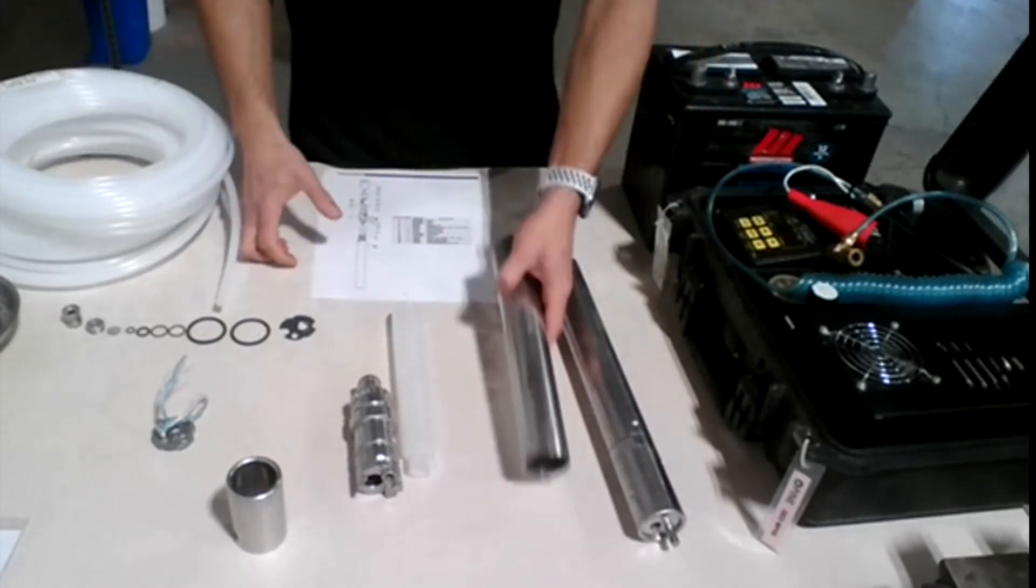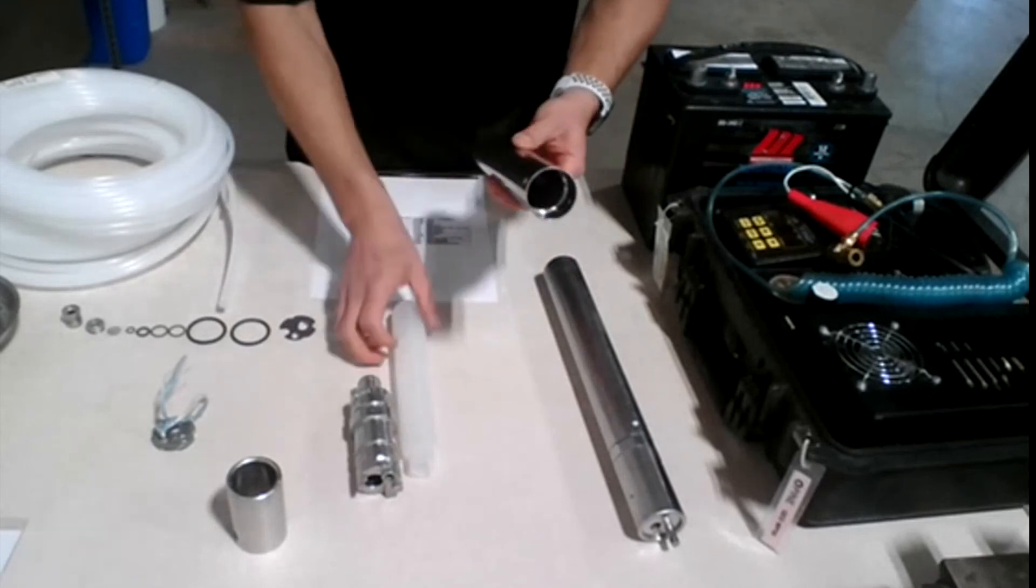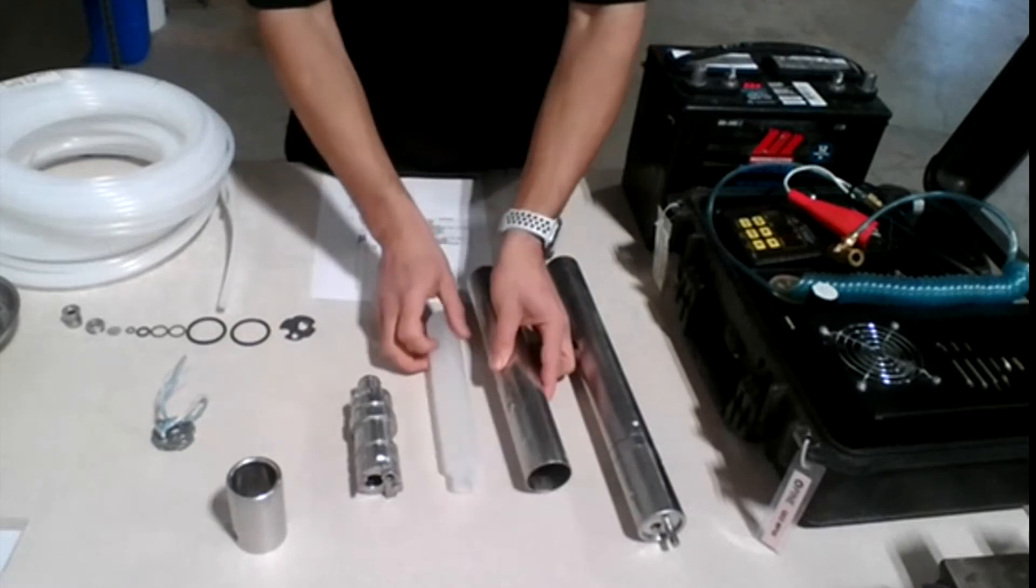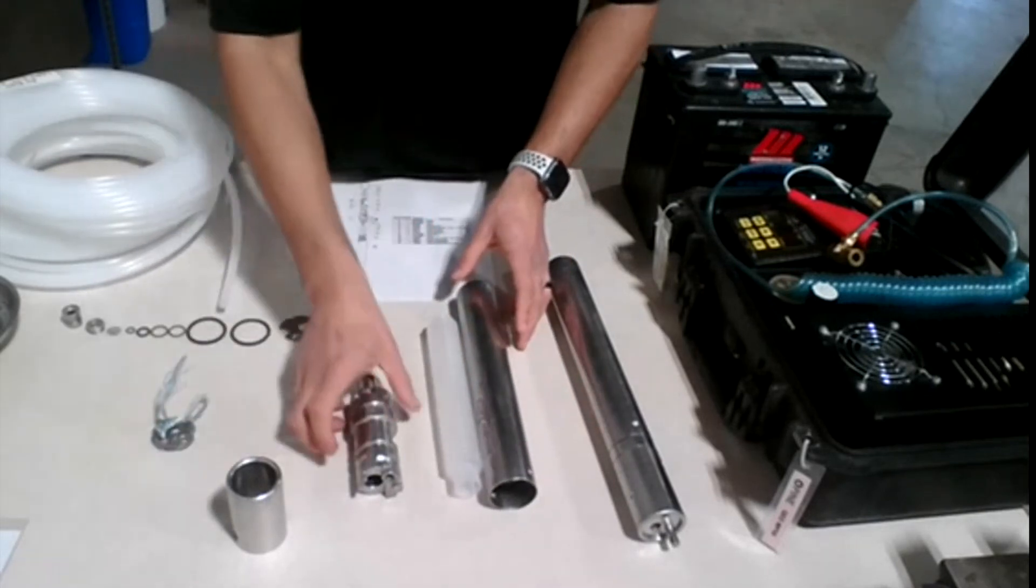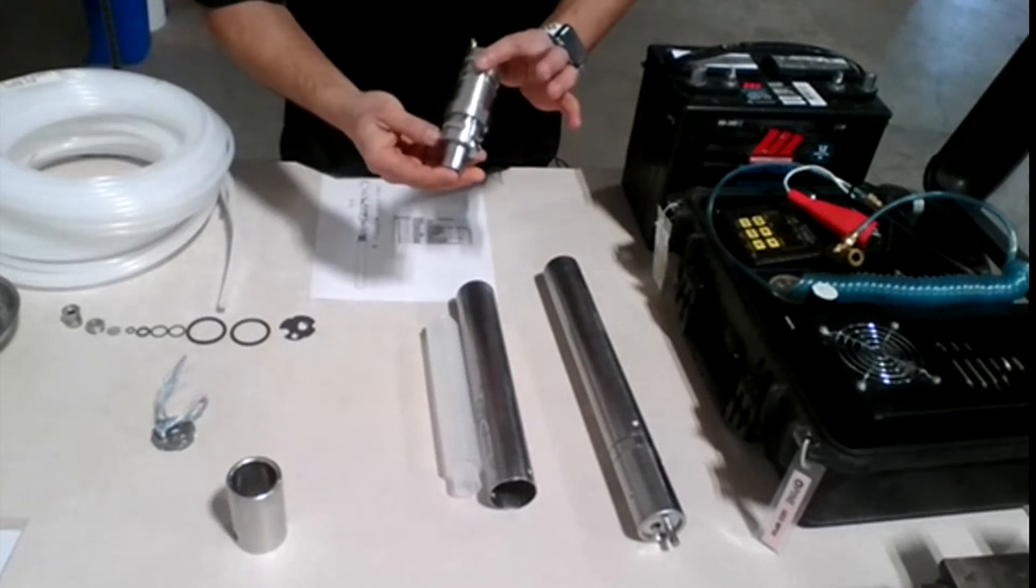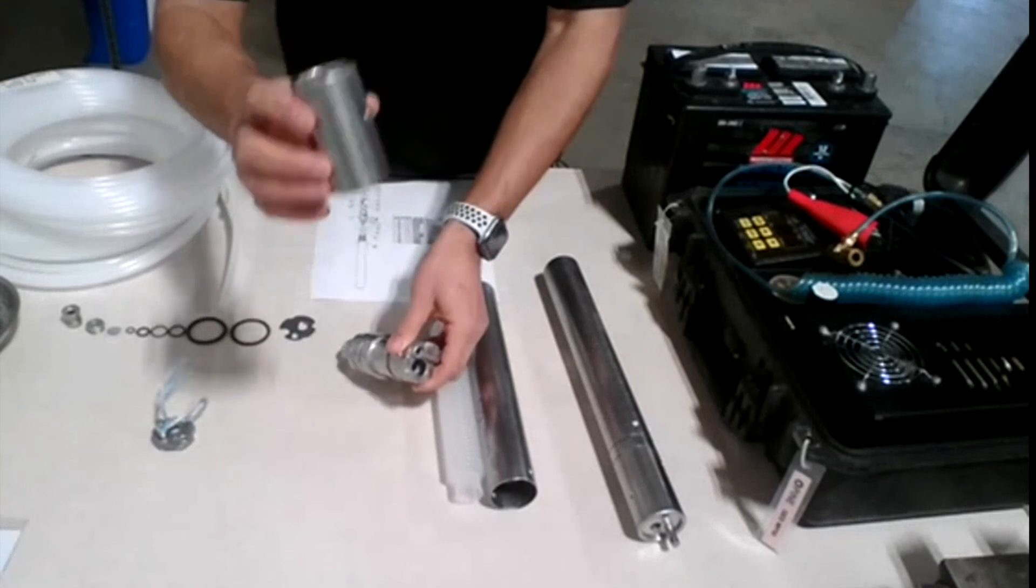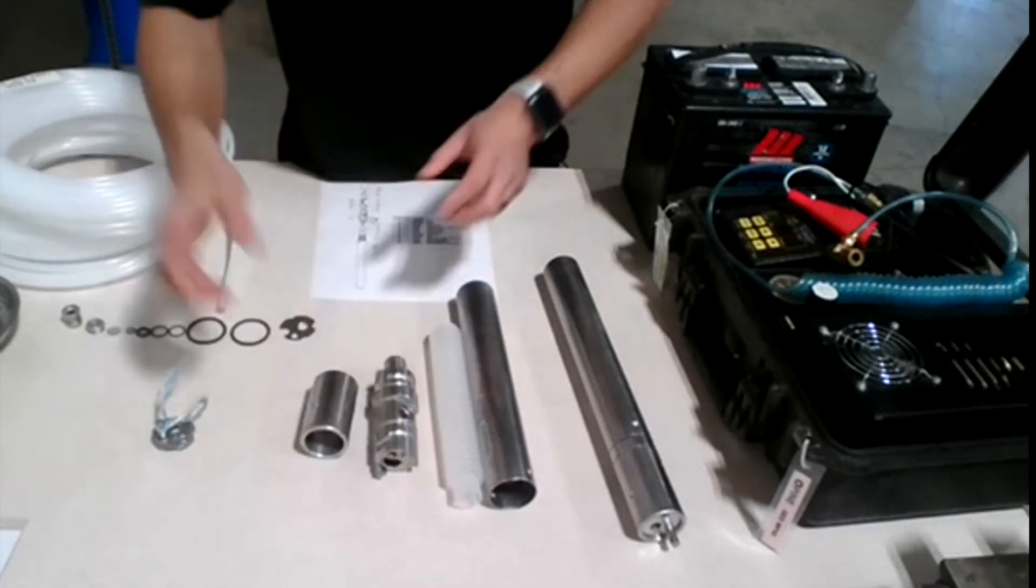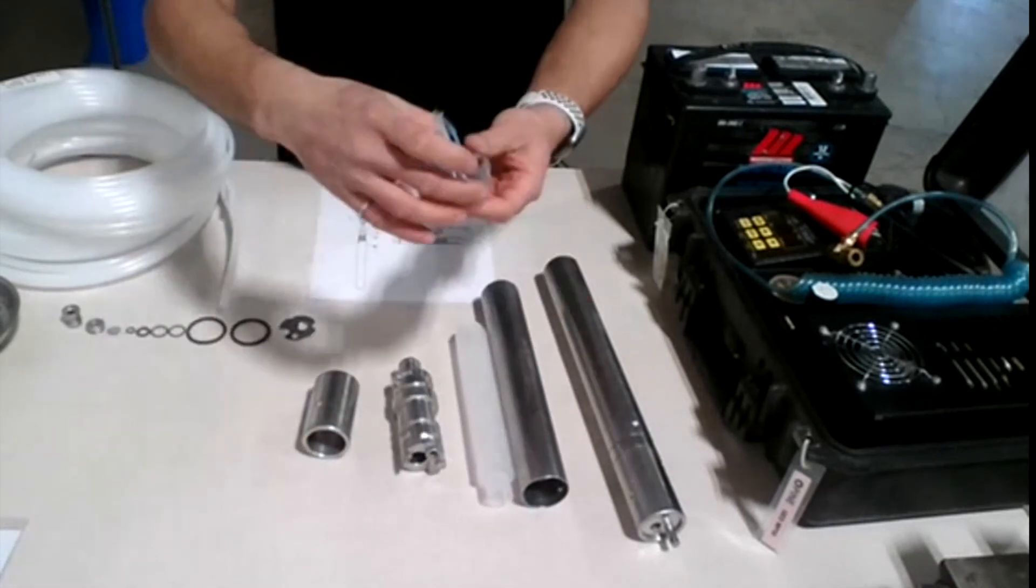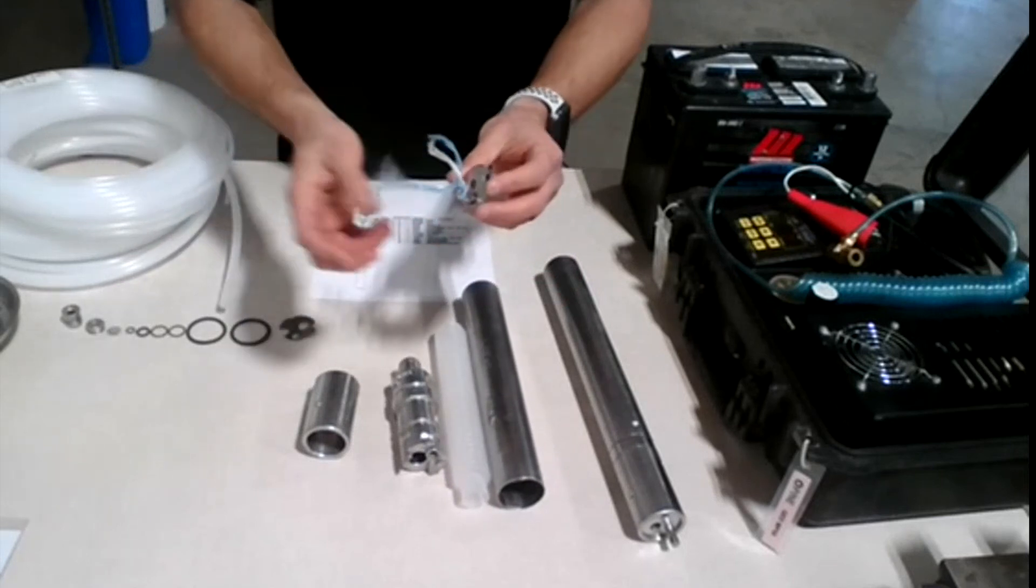So this is the housing where the bladder pump, where the bladder itself goes into. Components also we have here, as I'm showing you here, is the top part of the pump itself. We have the cover. We have the plate here that holds the pump when you're lowering down.